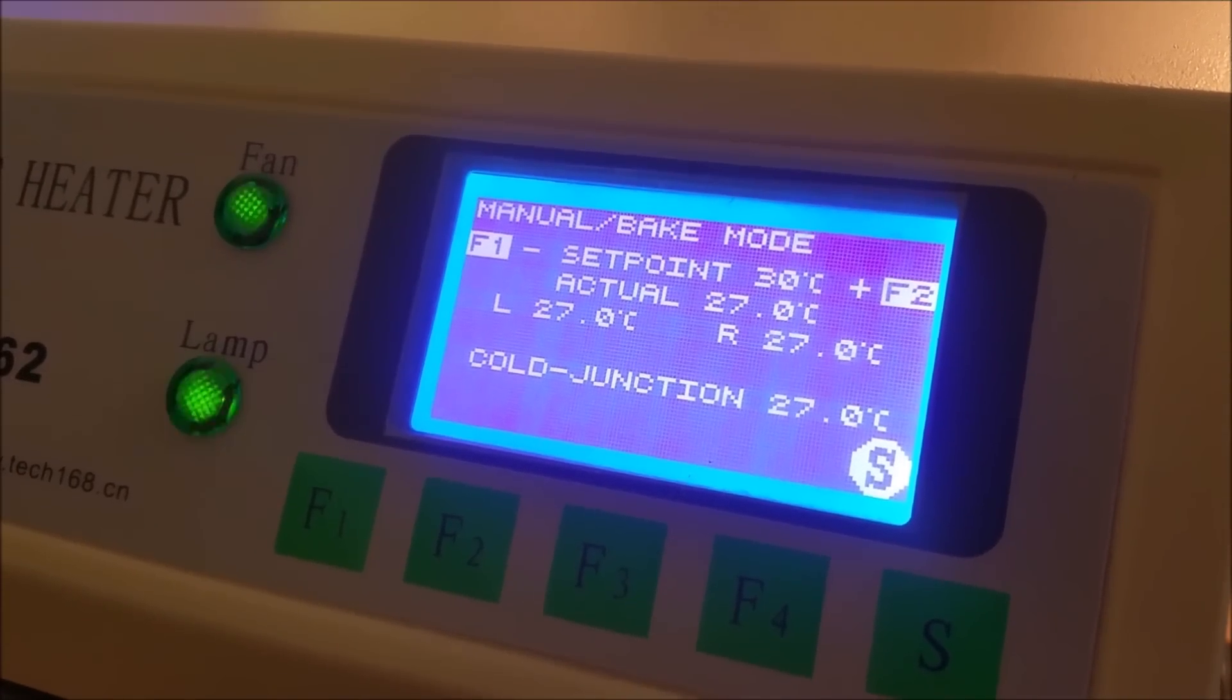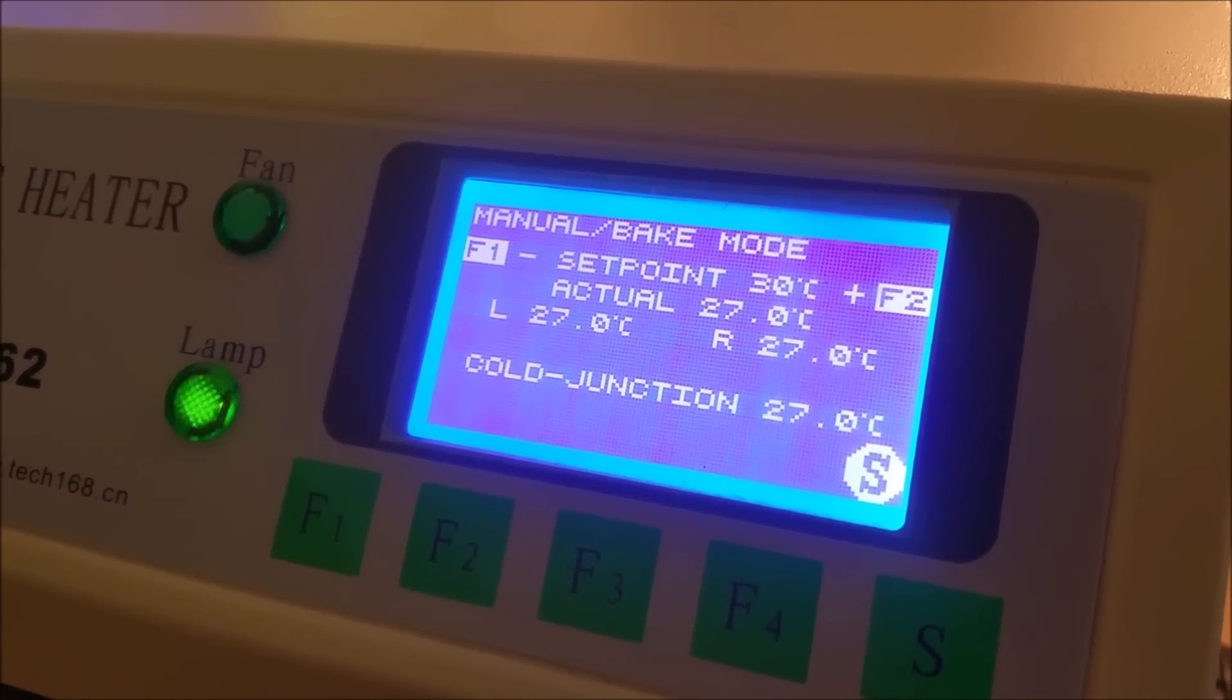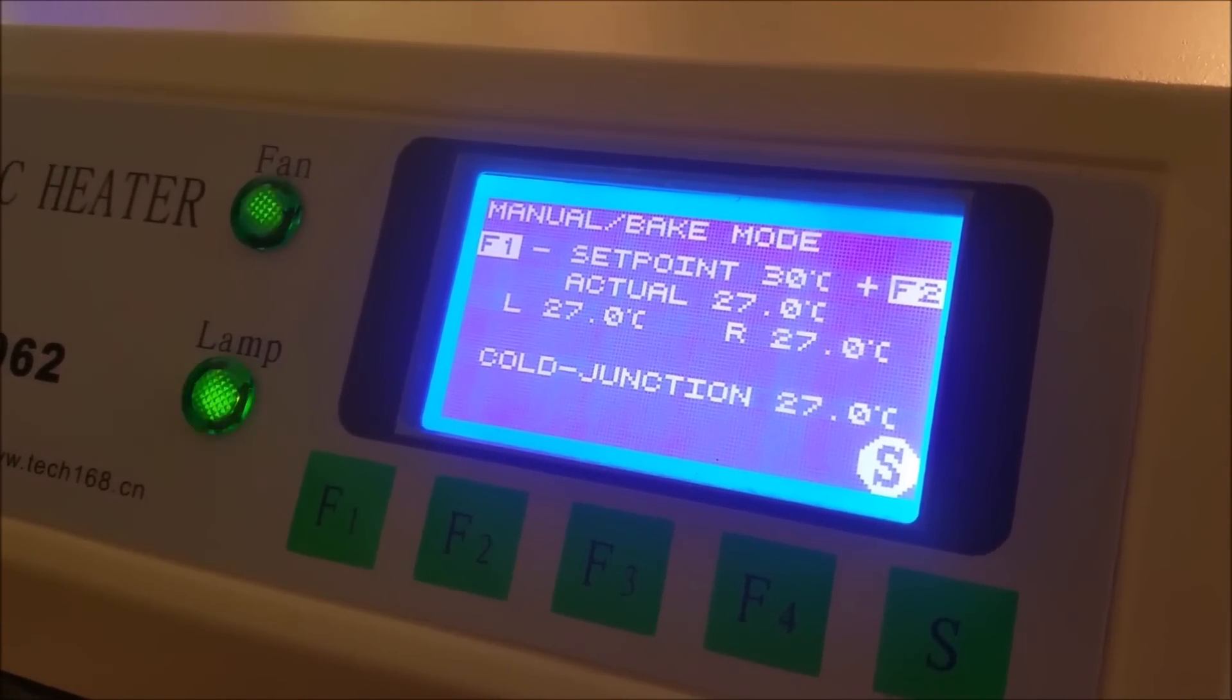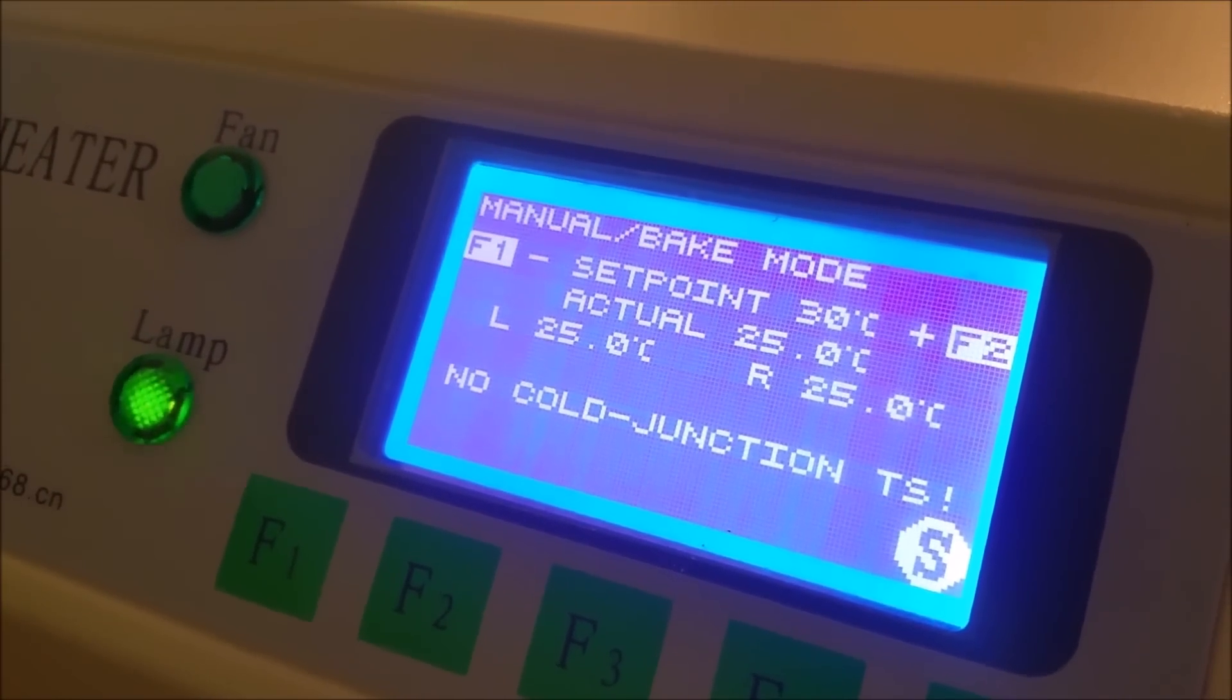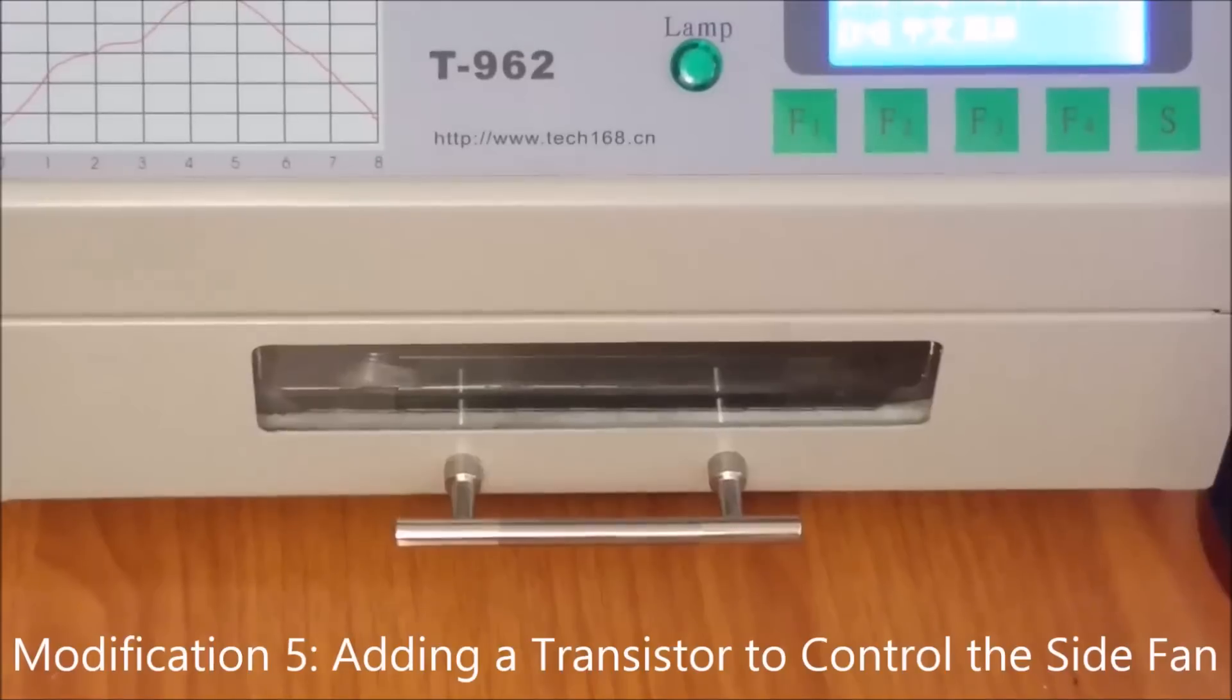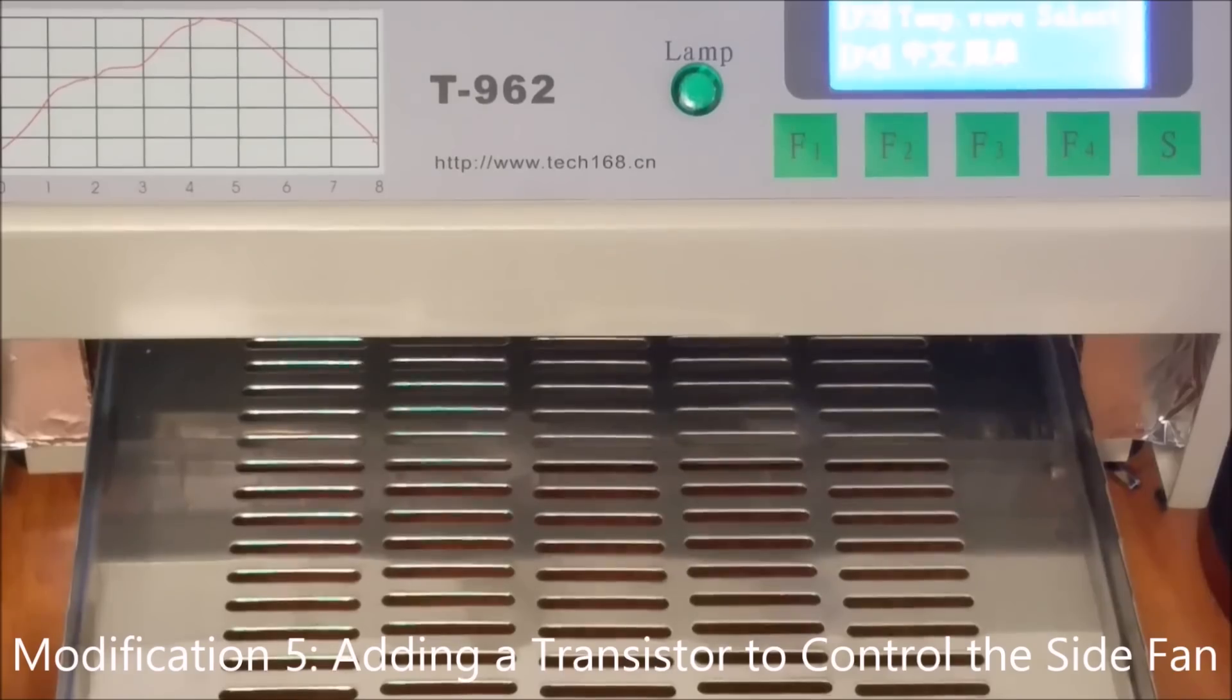At this point you can check to see if your sensor is working correctly. Go to the manual bake mode option and you should see close to the bottom the cold junction sensor readout on the temperature. If the sensor is not functioning properly, what you'll see is a no cold junction connected.